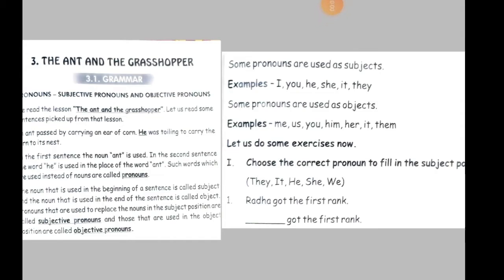Hello kids! Today's topic is Lesson Number 3 - The Ant and the Grasshopper from your workbook. In the workbook we do the grammatical part, and today's grammar topic is pronoun. We will take examples from your lesson to learn about pronoun.